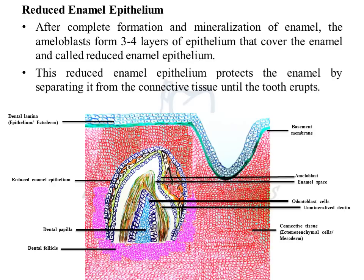That was all about the development of the crown of the tooth. If you have any questions, write them in the comment box and I will respond. In the coming lectures, we will discuss histological slides for better understanding. This lecture covered the basic concept of crown development through diagrammatic representation. We will also discuss the root of the tooth and how it develops from the cervical loop in future videos. Thank you.